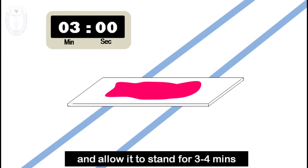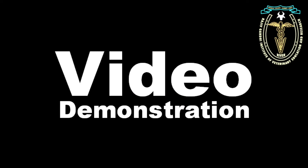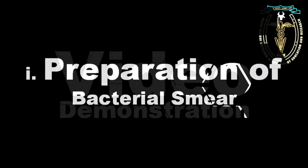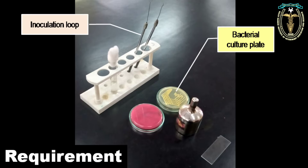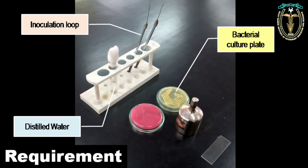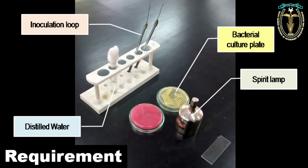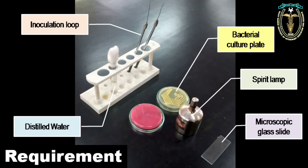Instead of methylene blue staining solution, use dilute carbol fuchsin — the rest of the procedure is the same. Now, the video demonstration. First we will see about the preparation of the bacterial smear. The materials required are the bacterial culture plate, the inoculation loop, distilled water, the spirit lamp, and the microscopic glass slide.